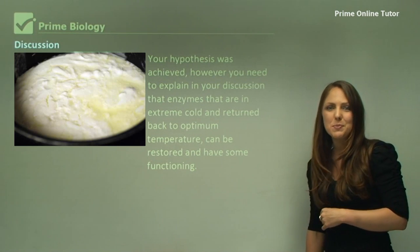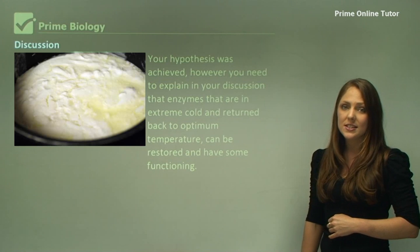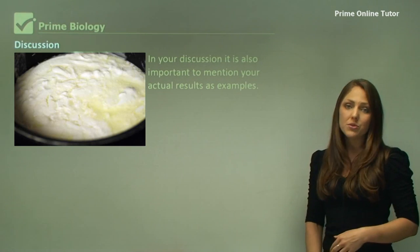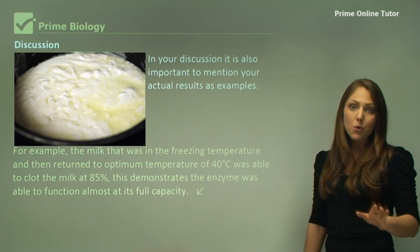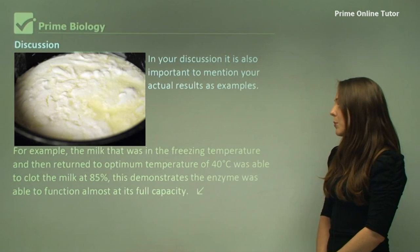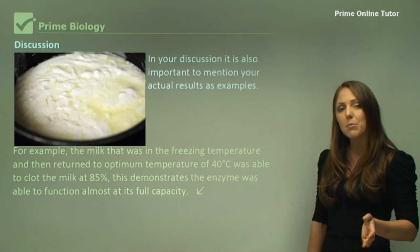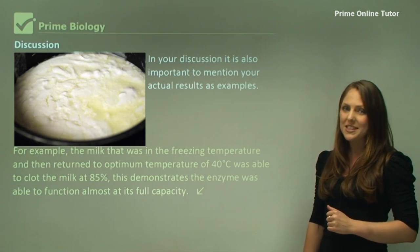In your discussion, it's also important to mention your actual results as examples. For example, the milk that was in the freezing temperature and then returned to optimum temperature of 40 degrees was able to clot the milk at 85 percent. This demonstrates the enzyme was able to function almost at its full capacity.